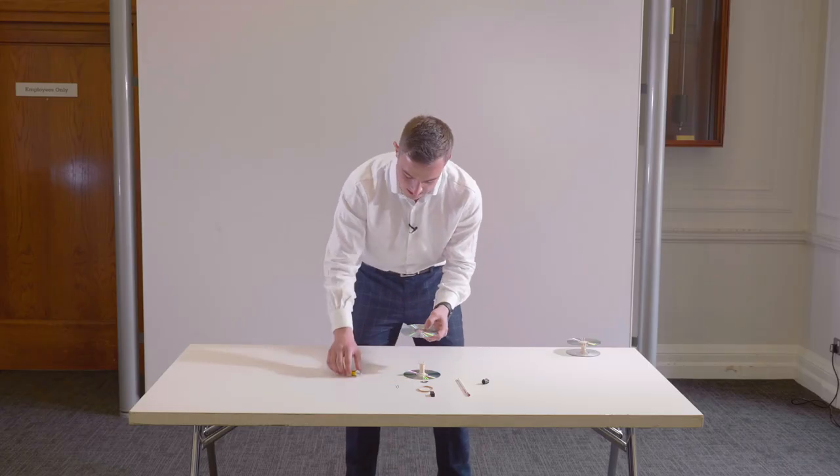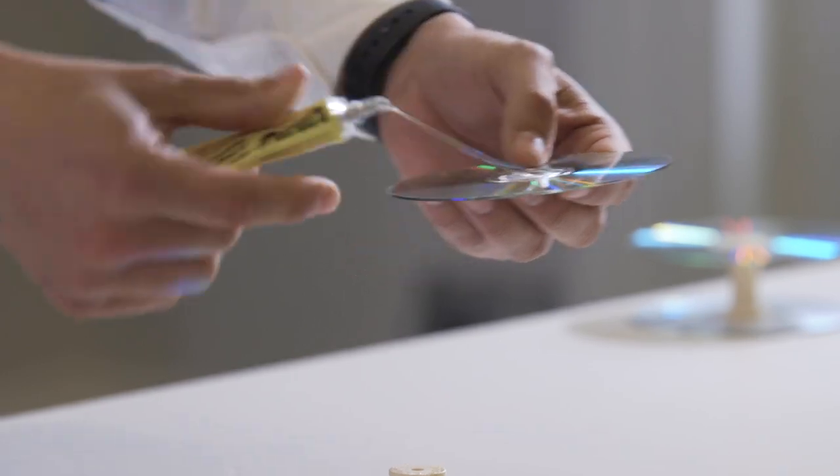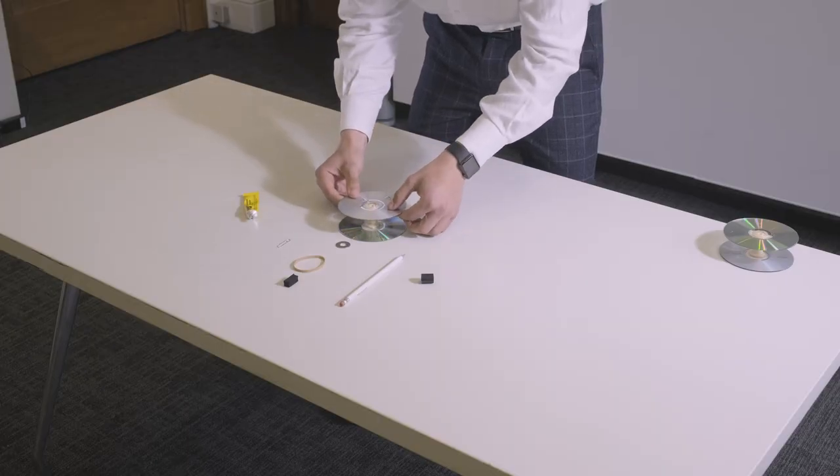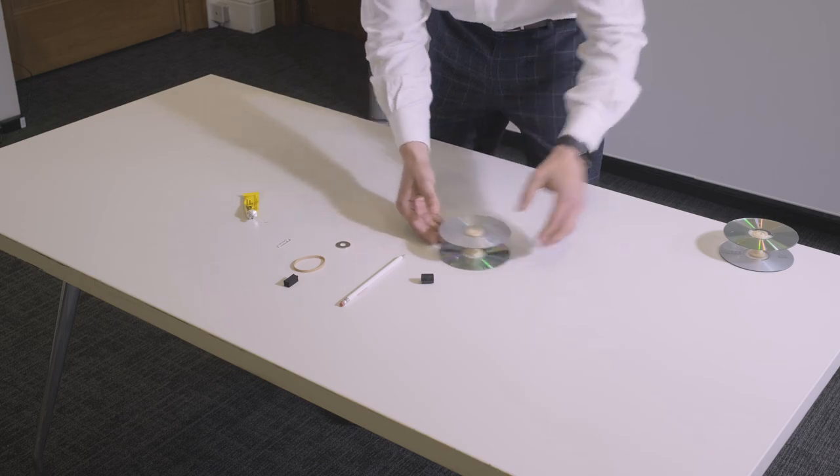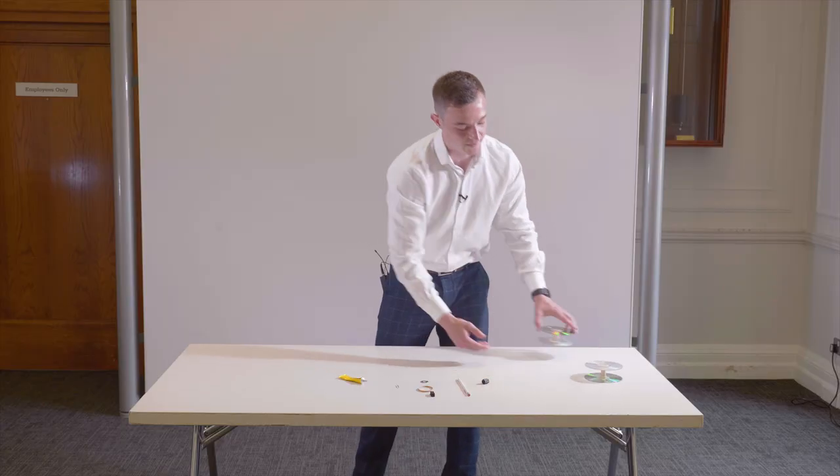Again take the second CD and place the glue around that and then again press it on ensuring that you can see through both holes and allow that to dry for five minutes.